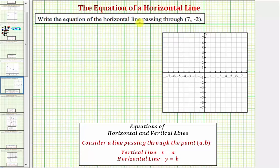We're going to write the equation of the horizontal line passing through the point (7, -2). Let's begin by plotting this point on the coordinate plane. So (7, -2) would be here.